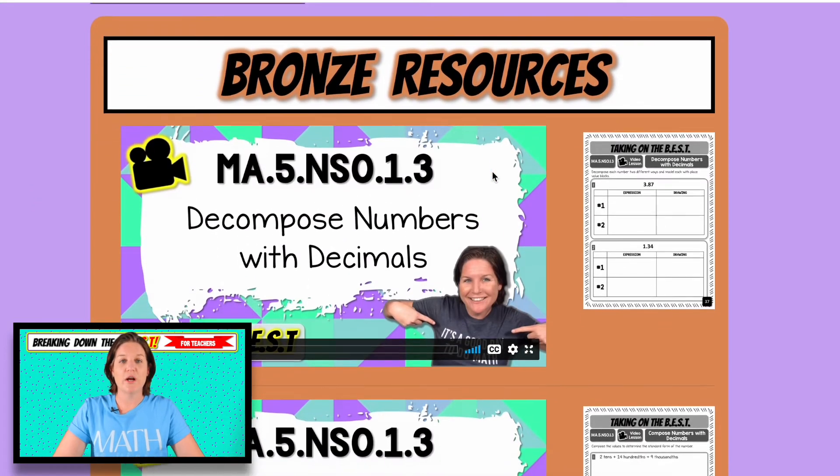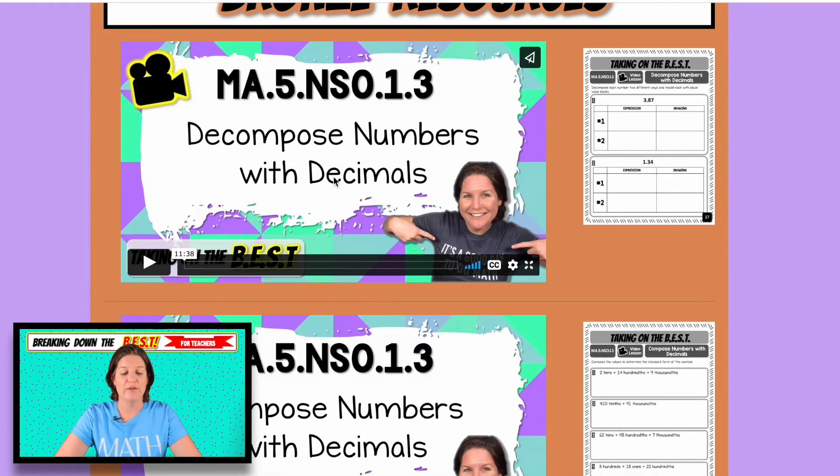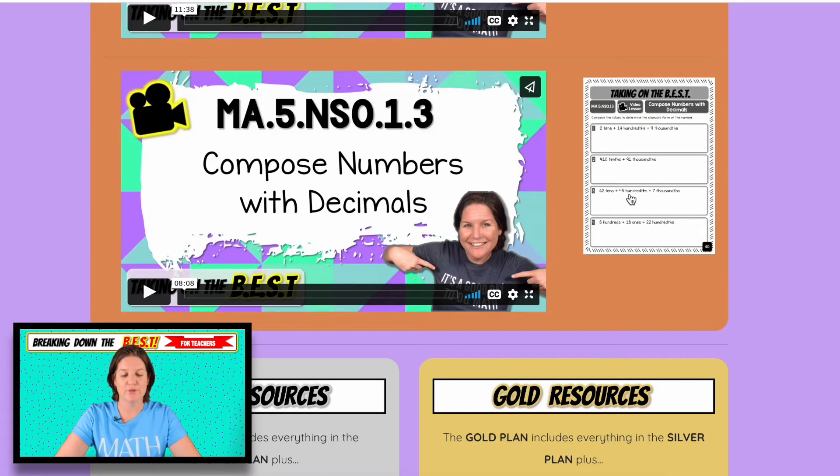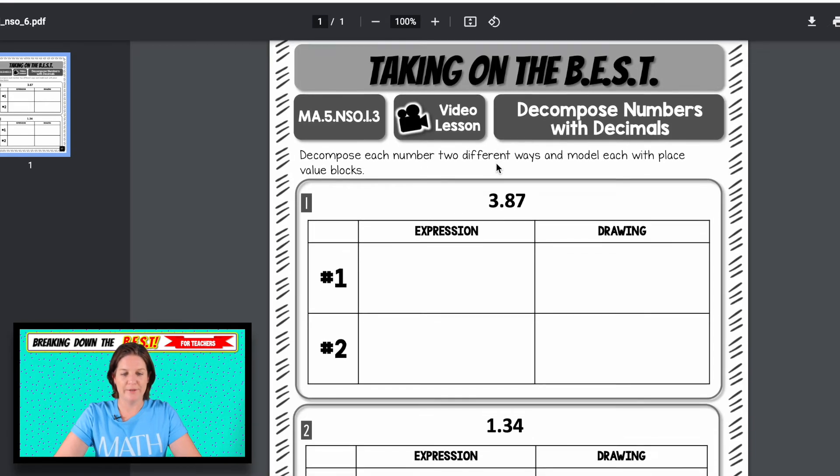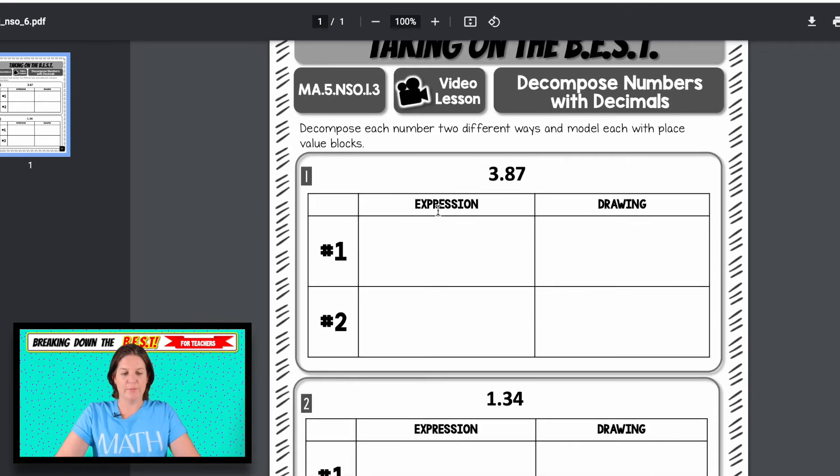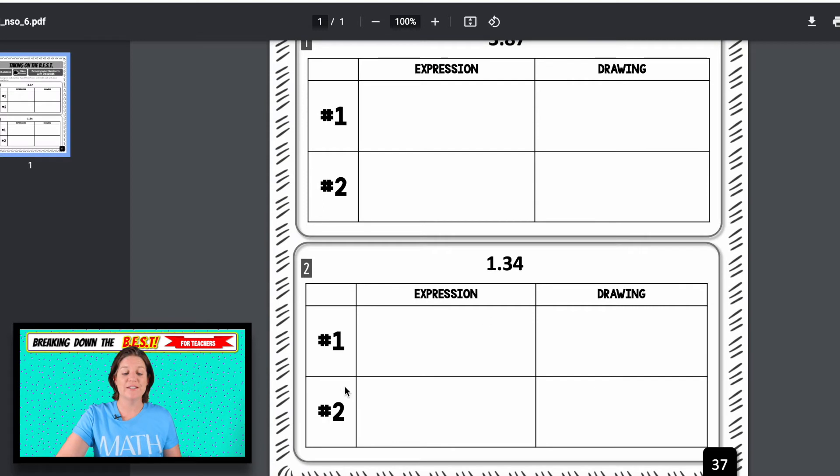So for the bronze resources, that's where you have your video lessons and your printable student guides that go with the lessons. We have a video on decomposing numbers with decimals and composing numbers with decimals. In my opinion, decomposing numbers is a little bit more challenging than composing numbers. Okay, so here's an example of the printable guide that they would see. It says decompose each number two different ways and model each with the place value block. So we will take the number in standard form, decompose it two different ways and model it with a drawing.